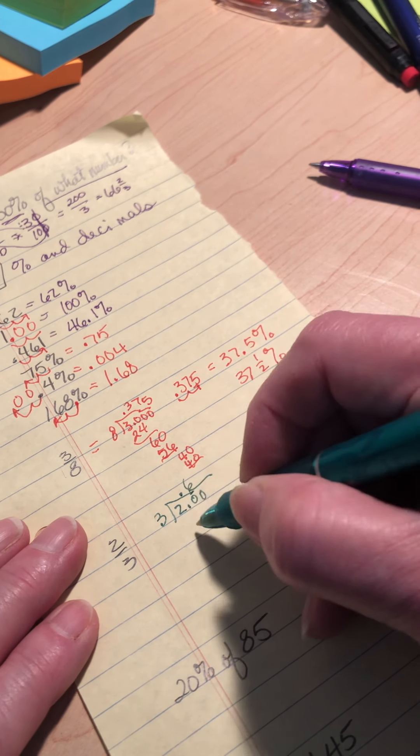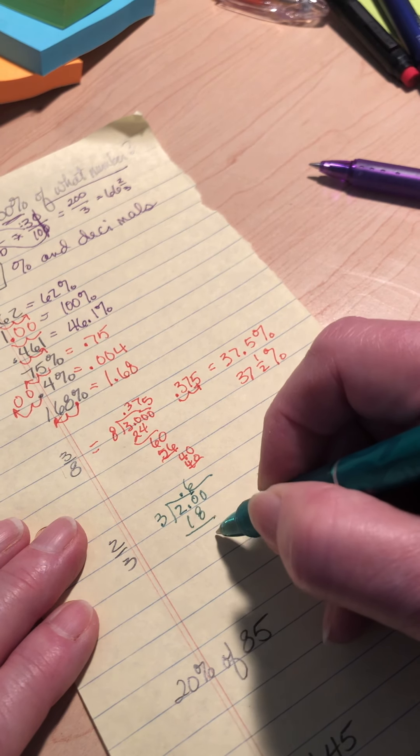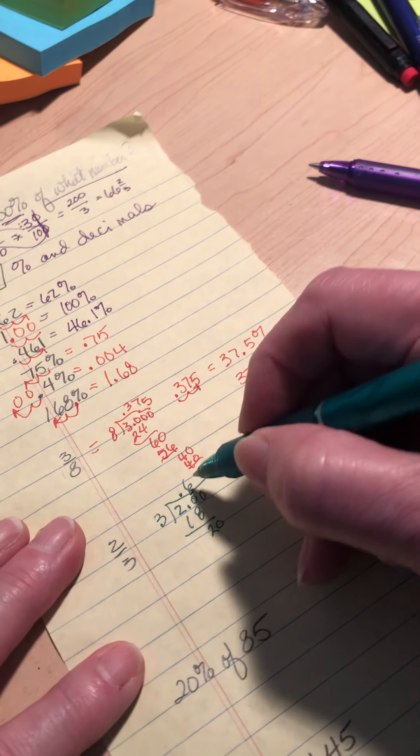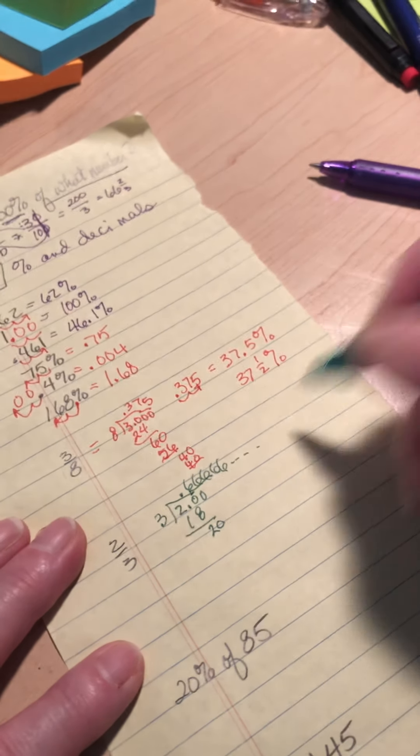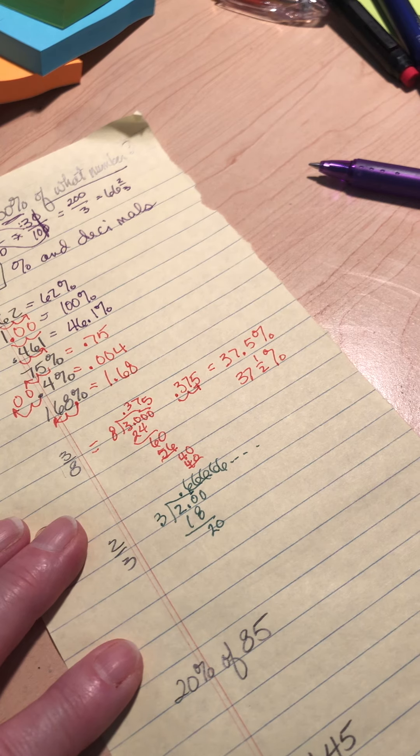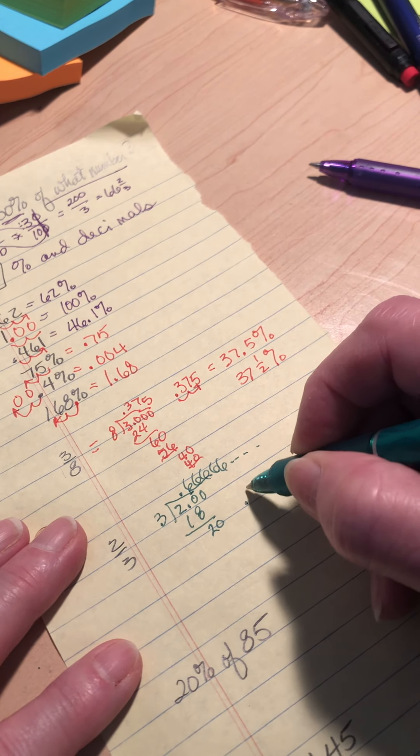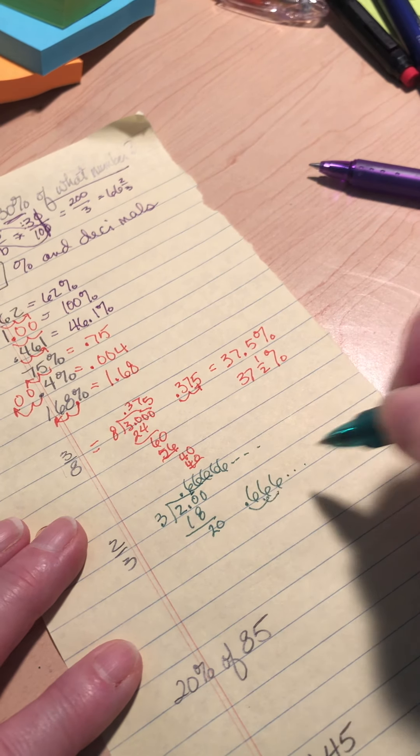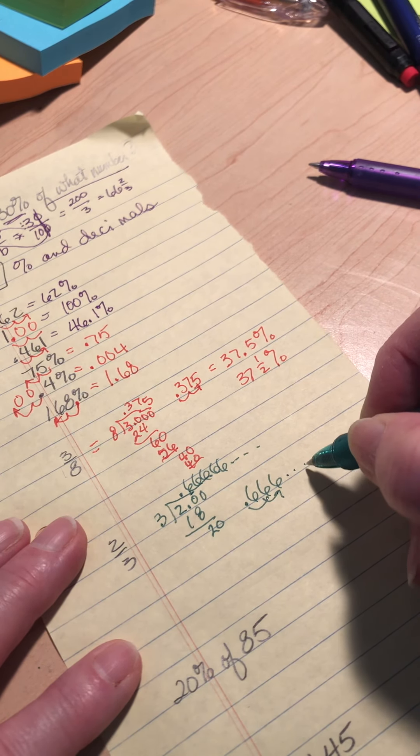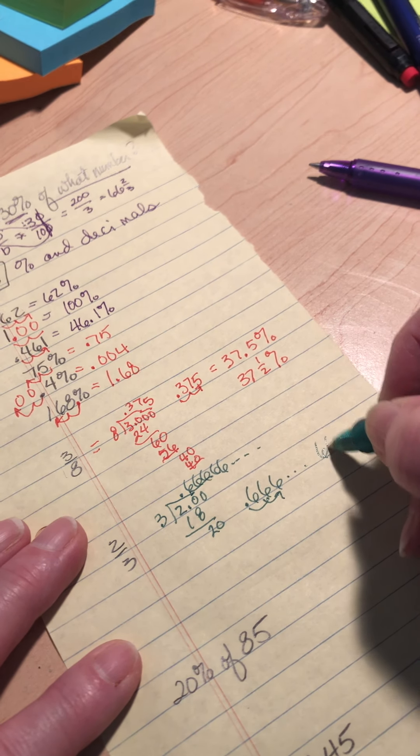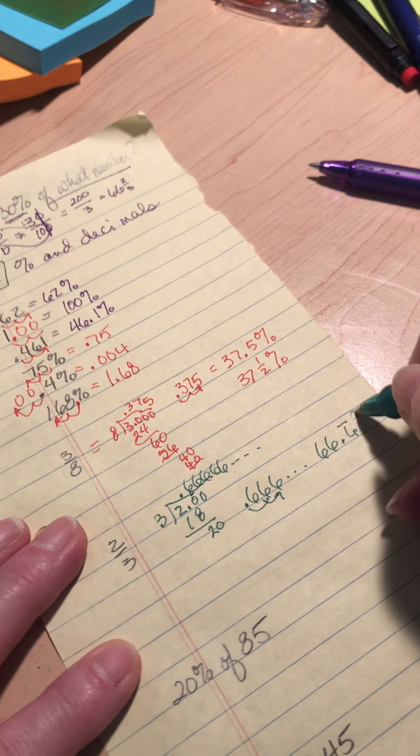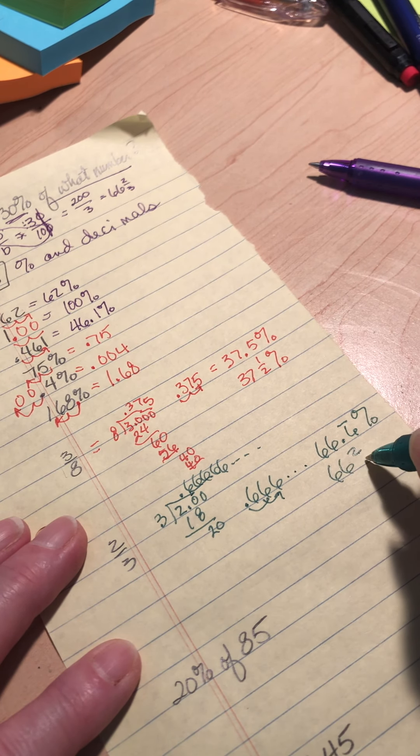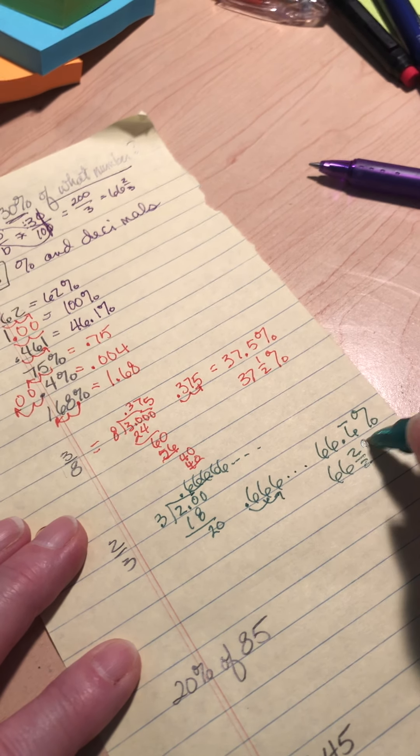So how do I change that to a percent? Well, I need at least 3 of them because I've got to move it twice. So that's going to be 66.6 repetend percent. But even better is to say 66 and 2 thirds percent.